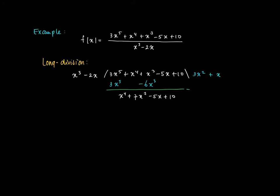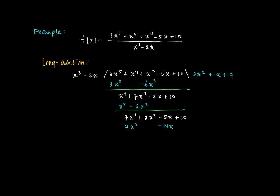We have a polynomial of degree 3, so this fits x times inside this expression. So we get x to the power 4 minus 2x squared, since this is x times the divisor. Again we take a difference and we obtain 7x to the power 3 plus 2x squared minus 5x plus 10. Now how often does x to the power 3 fit in 7x to the power 3? Indeed 7 times. So we subtract 7 times x to the power 3 minus 14x. Taking the difference we end up with a quadratic polynomial of degree 2: 2x squared plus 9x plus 10. Since this has lower degree than 3, this will be the remainder term.